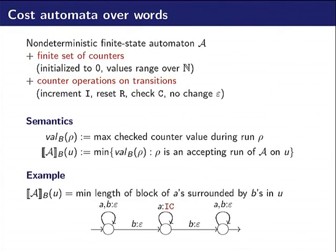There is a semantic called the B semantic. When we look at a run of such an automaton, we look at all the checked values along the run and remember the maximum one to give a value to the run. The semantic of the automaton on word u will be the infimum of all the run values on this word.